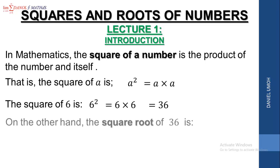On the other hand, the square root of 36 — remember, we said the square of 6 is 6 times 6 and it gives us 36. Therefore, the square root of 36 will give us 6. The square root of 36 is 6, because the square of 6 is 36. Square root is like a reverse of squaring.